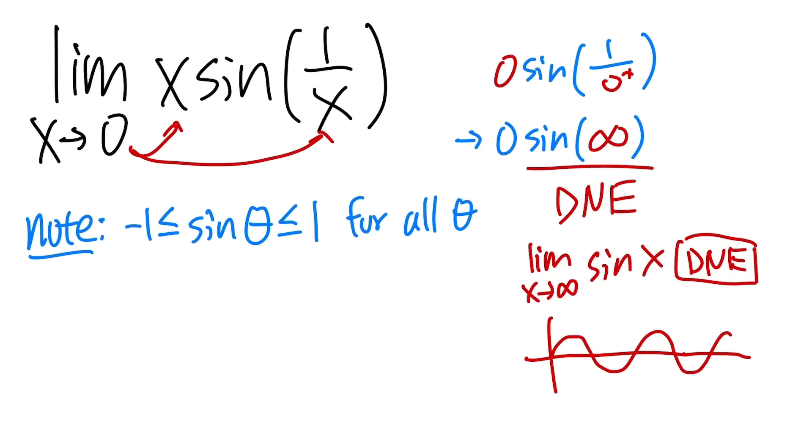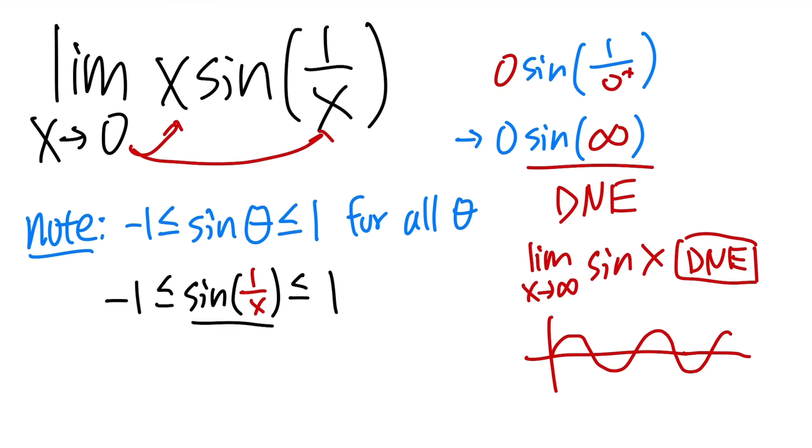So, since this is for all theta, we can put 1 over x into theta, and this is still true. So, if you look at sine of 1 over x, this right here will still give you in between negative 1 and 1. Perfect. Now, you see, this is kind of like what we have, but we just need to have the x right here, right?